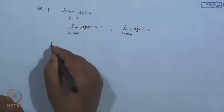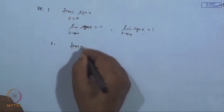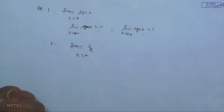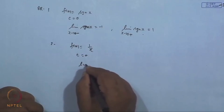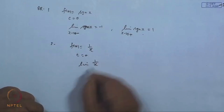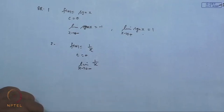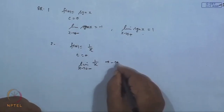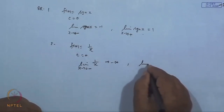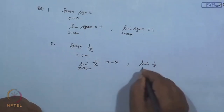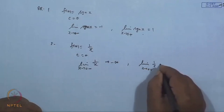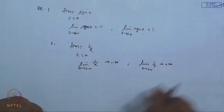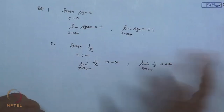For the function f(x) = 1/x at c = 0: lim(x→0⁻) 1/x = −∞ and lim(x→0⁺) 1/x = +∞. The limit does not exist, and the two one-sided limits diverge to different infinities.